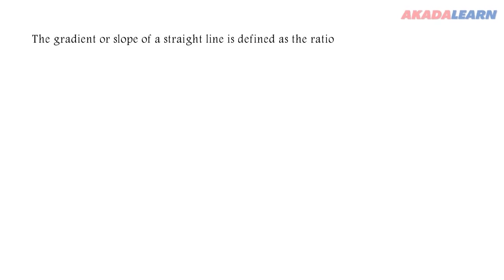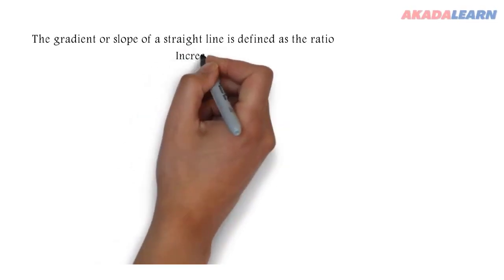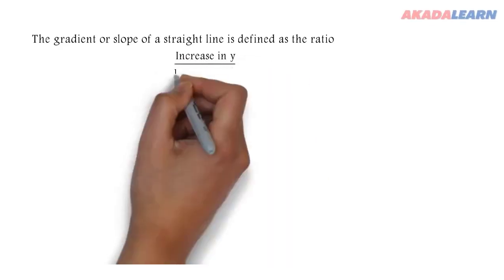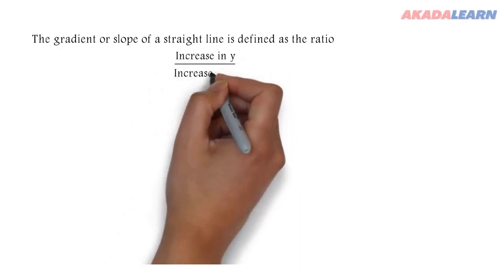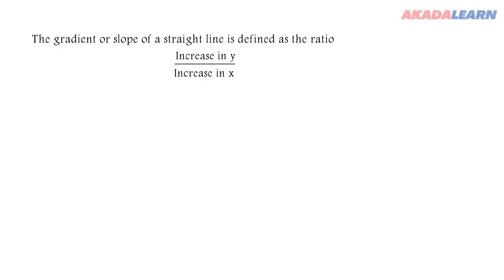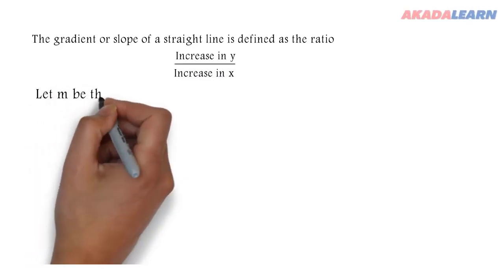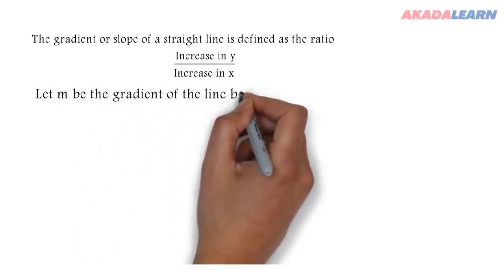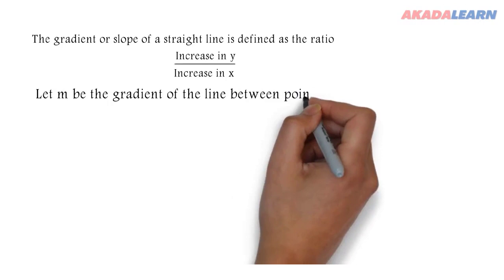The gradient or slope of a straight line is defined as the ratio increase in y over increase in x, or decrease in y over decrease in x, meaning that the gradient can either be positive or negative.